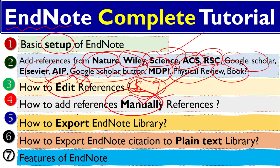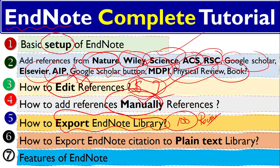The fifth step is very very important: how to export an EndNote library. This means that if you have, for example, 100 references in your review article and you want to send it for revision or proofreading, sometimes you need to send the EndNote library file as well. But I will show you that you can export it from the MS Word document directly while EndNote is active.